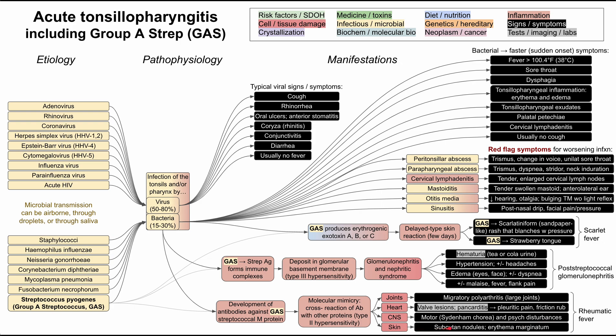Lastly, the skin symptoms of rheumatic fever are worth knowing: subcutaneous nodules and erythema marginatum are both associated with rheumatic fever. This has been a brief flowchart of acute tonsillopharyngitis, including some group A strep complications. I hope this was helpful — mainly in differentiating viral from bacterial symptoms, knowing the red flag symptoms when bacterial infection is spreading, and knowing the complications specific to group A strep. Thank you for listening.